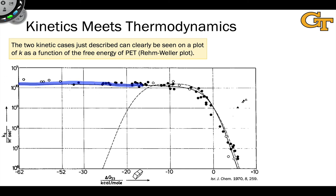When delta G is very negative, when the PET process is profoundly favored thermodynamically, we see that the rate constant of quenching, which is plotted on the y-axis, basically flattens out around 10 to the 10th per molar per second.